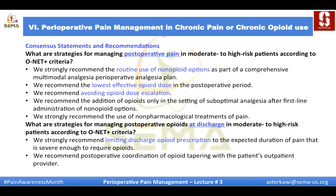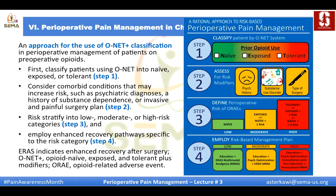For managing postoperative opioids at discharge in moderate-to-high-risk patients, the consensus strongly recommends limiting discharge opioid prescriptions to the expected duration of pain severe enough to require opioids, and coordinating postoperative opioid tapering with the patient's outpatient provider. In summary, the steps are: classify the patient using ONET (naive, exposed, or tolerant); consider comorbid conditions that increase risk; risk-stratify to low, moderate, or high risk; and employ enhanced recovery pathways specific to the risk category.